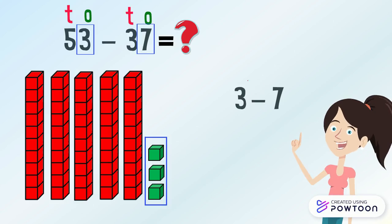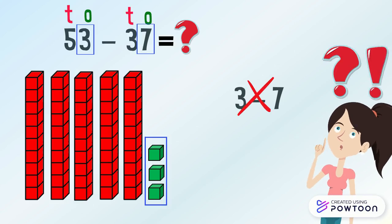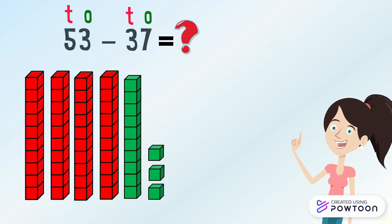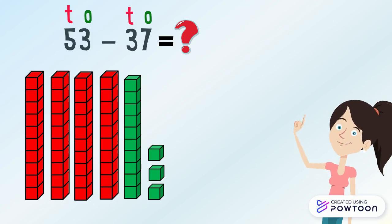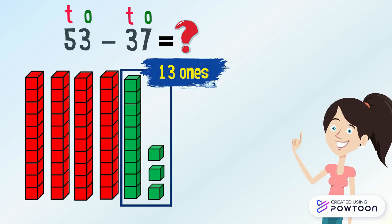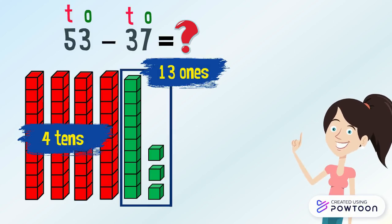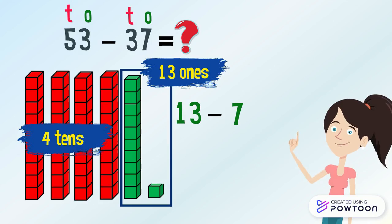I found an idea. I will regroup one ten as ten ones. Now we have 13 ones and four tens. Now we can calculate 13 minus seven. Take away from 13 ones seven ones. 13 minus seven equals six.